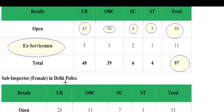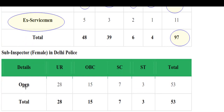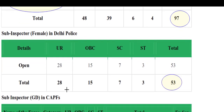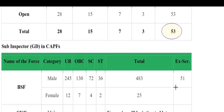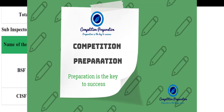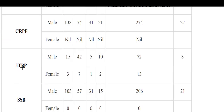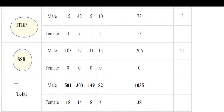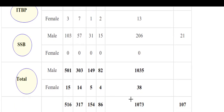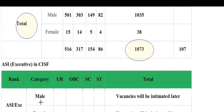SSC CPO vacancies for female in Delhi Police: total 53. Inspector CAPF vacancies across BSF, CISF, CRPF, ITBP, and SSB have a total vacancy of 173.